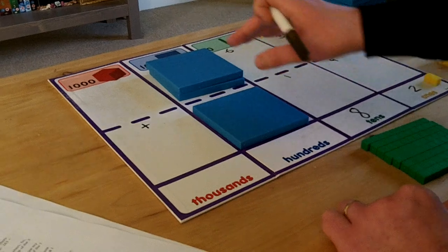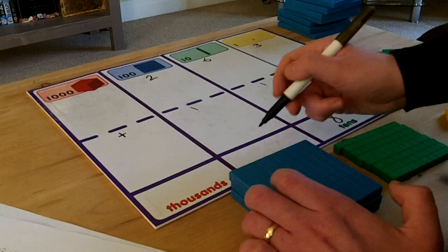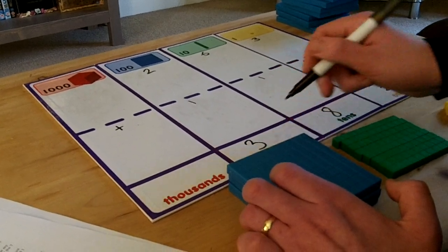Finally in the hundreds column I have got 200 add 100. This gives me 300 which I show by writing a 3 here.